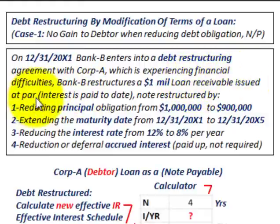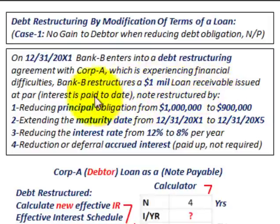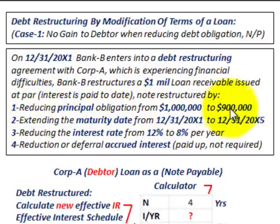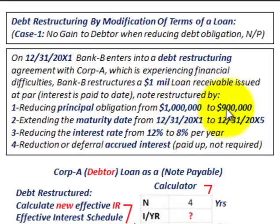The note was originally issued at par and interest is paid up to date, so we don't have to be concerned with that. The note is going to be restructured in four ways. Number one: we're reducing the principal obligation from $1,000,000 to $900,000. So Corporation A would normally have had to pay $1,000,000, but now will only have to pay $900,000 on this outstanding note.